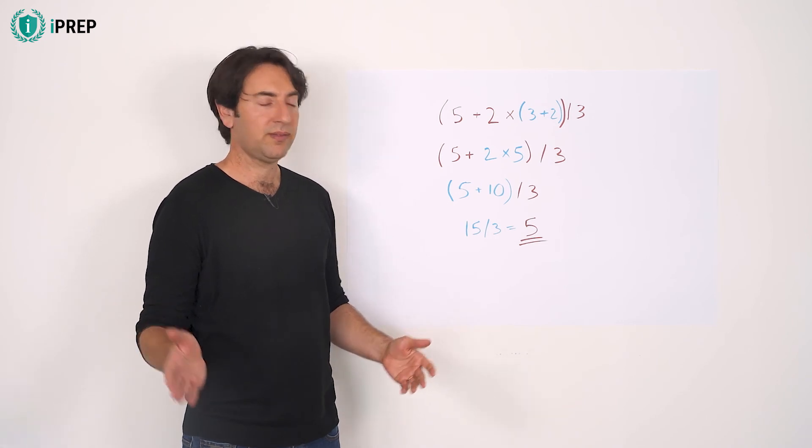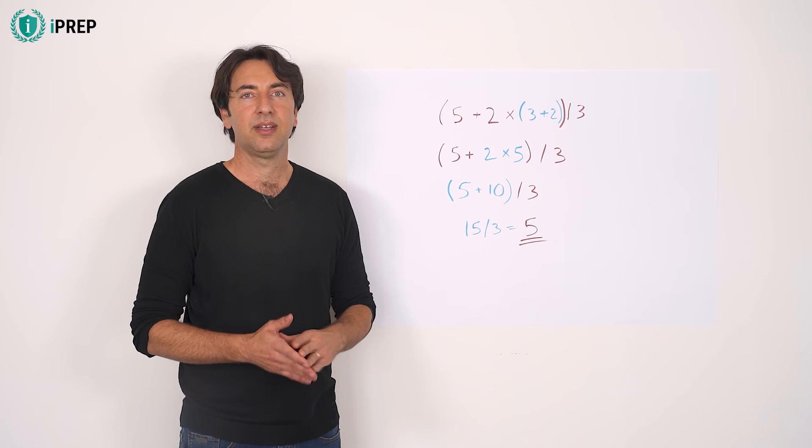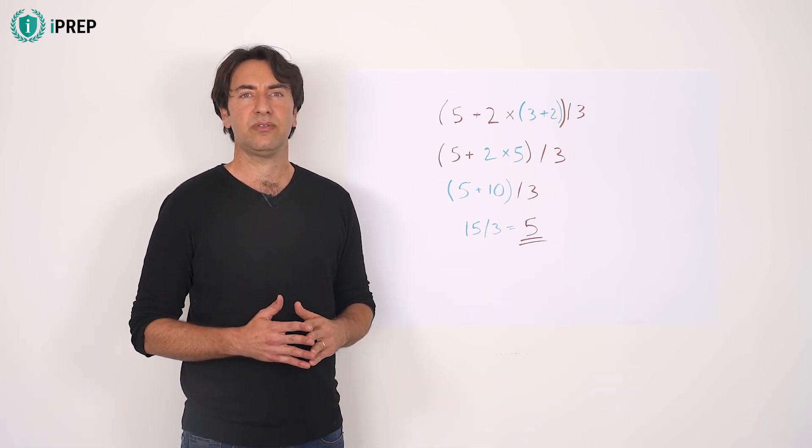And the resolution. 15 divided by 3 equals 5. Then, if you have anything else, you continue according to the order of operations.